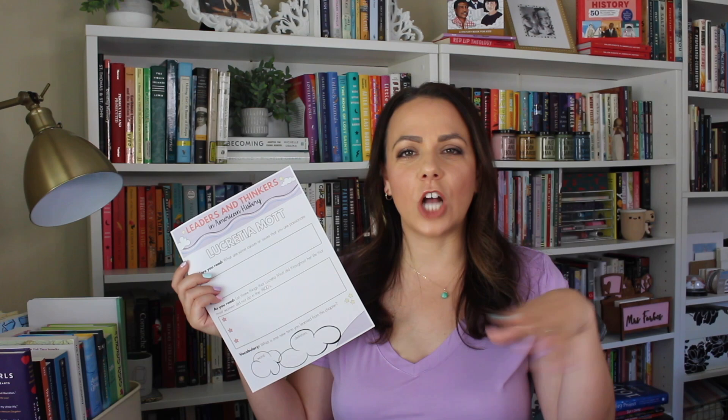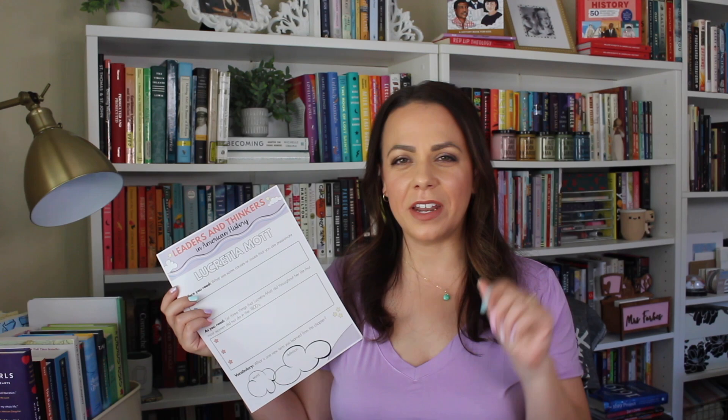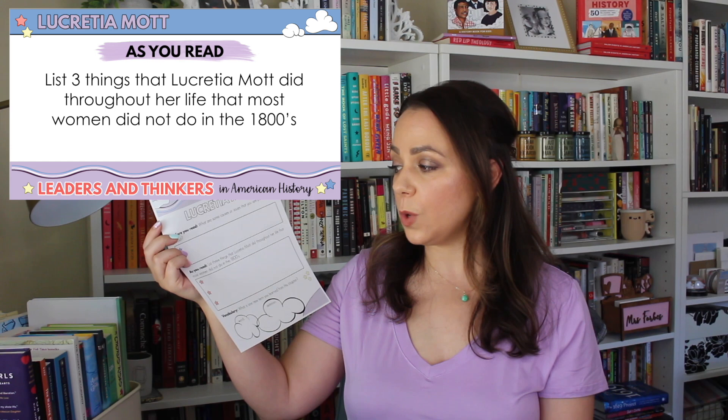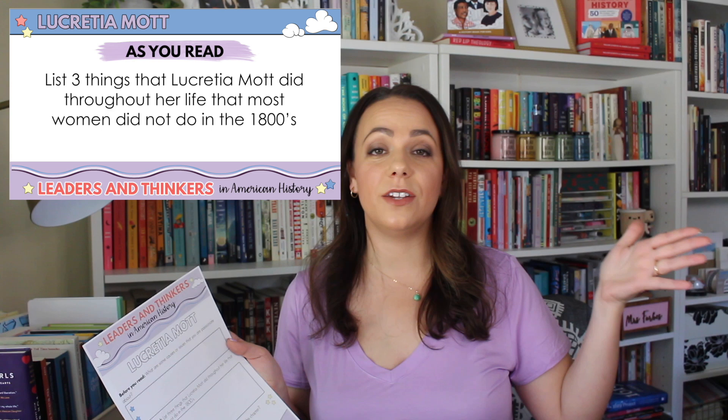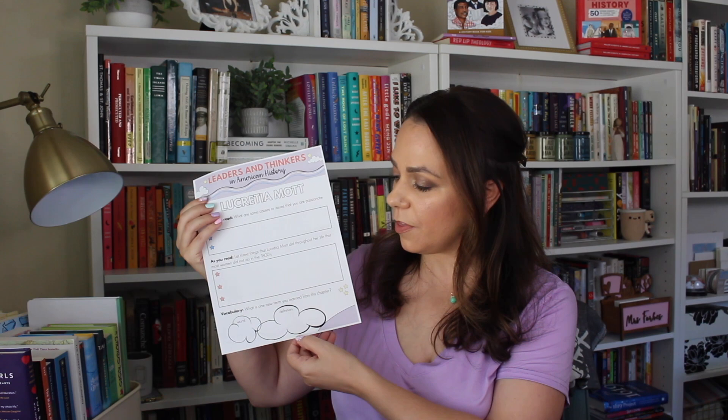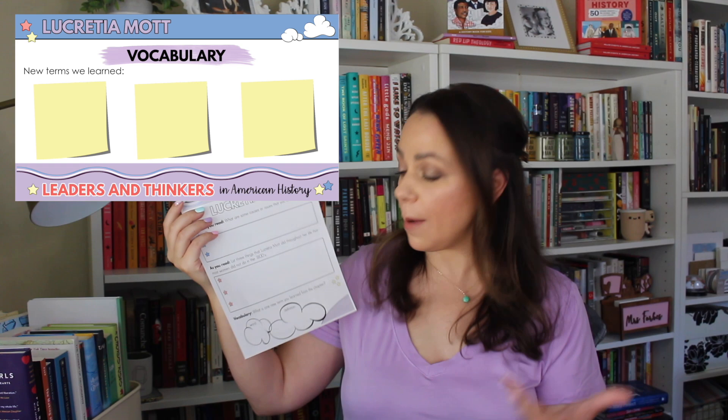As you read, students are on alert to look out for a few things. The worksheets aren't super comprehension-heavy — it's not like, what did it say on page 67 about whatever. You're more looking for themes and patterns. For Lucretia Mott, it says: list three things that Lucretia Mott did throughout her life that most women did not do in the 1800s. That'll be projected on your board through your slides, and they'll be thinking about it because it's on their worksheet. Even if reading aloud without individual copies, they can jot notes and you can revisit after the chapter. There's also a vocabulary section to build their vocabulary — they write a new word or term they learned and find the definition.